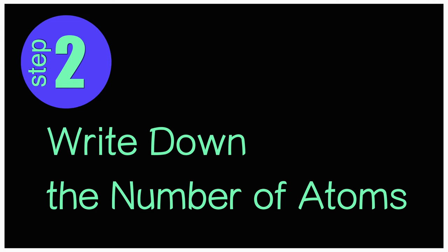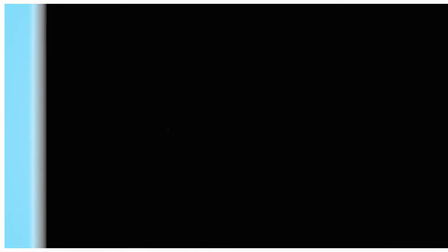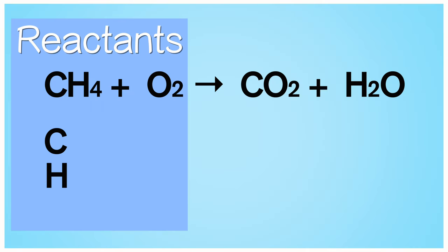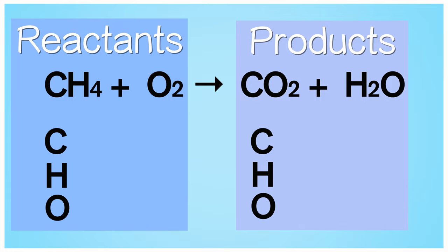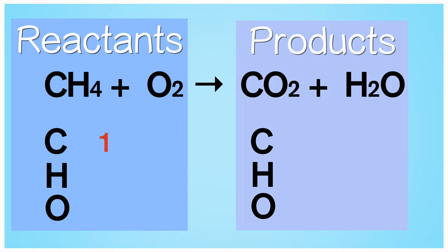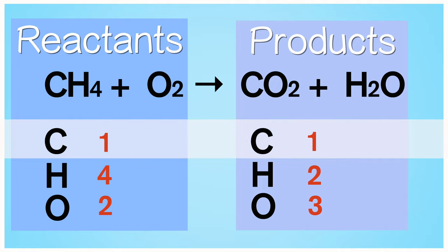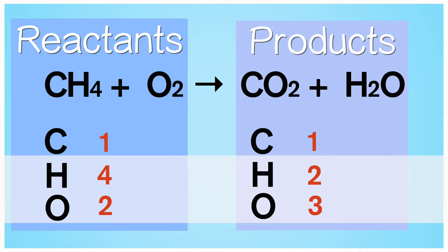Step 2: Now let's write down the number of atoms. Make a list of all the atoms on each side of the equation for both the reactants and the products. Next to each atom, put the number of atoms present. On the reactant side, next to carbon put 1, next to hydrogen put 4, next to oxygen put 2. Apply these same rules to each atom on the product side as well. Notice how the number of atoms on the reactant side can be different from the number of atoms on the product side. In this case, the number of carbon atoms is the same on both sides; however, the numbers of oxygen atoms and hydrogen atoms are different.